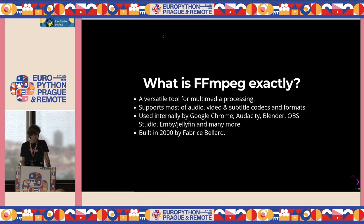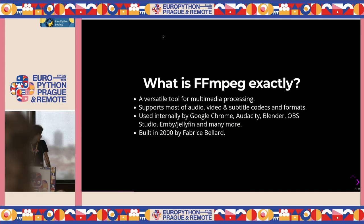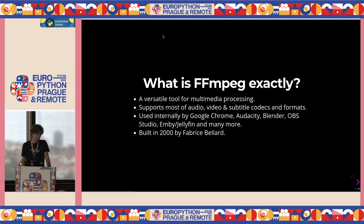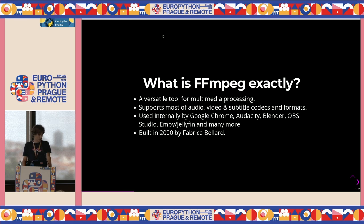FFmpeg is like a Swiss Army knife for multimedia processing. It supports most audio, video, and subtitle codecs and formats, and it is used internally by a lot of tools you probably use without knowing — like Google Chrome, Audacity, Blender, OBS Studio, and Jellyfin, including YouTube DL, whose core M3U playlist management is based on FFmpeg. This tool was built in 2000 by Fabrice Bellard and developed rapidly in the years after.